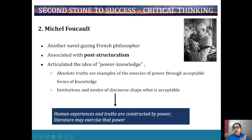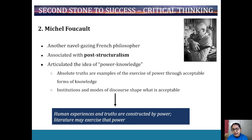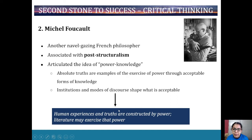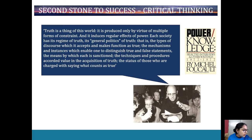Next we've got Michel Foucault, a French philosopher associated with post-structuralism. He articulated the idea of power-knowledge — absolute truths are an example of the exercise of power through acceptable forms of knowledge. Basically, institutions and modes of discourse shape what is acceptable, and therefore human experiences and truths are constructed by power, and literature may exercise that power. Think about texts like The Crucible or 1984 — you can think about how the text itself exercises that power to show us what's right versus what's wrong, as a way of critically thinking about how human experiences are portrayed.